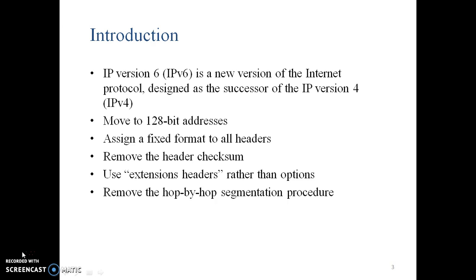As covered in the first presentation, IPv6 has 128-bit addresses and a fixed header format. There is no header checksum. In place of the options field present in IPv4, there are extension headers in IPv6. Also, unlike IPv4, there is no hop-by-hop segmentation — instead, end-to-end segmentation is done in IPv6.